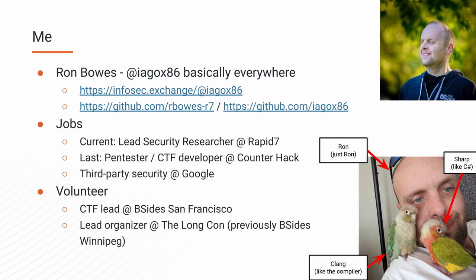The other half of my job is finding vulnerabilities ourselves — picking a piece of software like the one we're talking about today, diving into it as deeply as I can and finding all the bugs I can. I'll talk about the results of one of those projects. You can find me online; Iago x86 is my general alias everywhere. I also work at Rapid7 — I should mention that because they're paying for my travel.